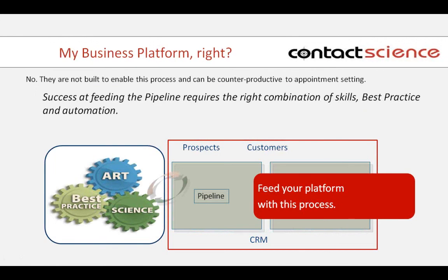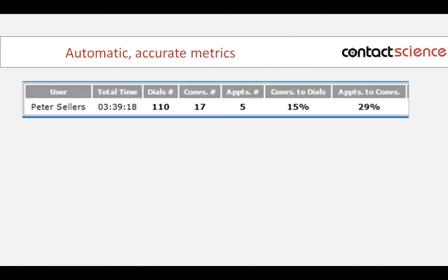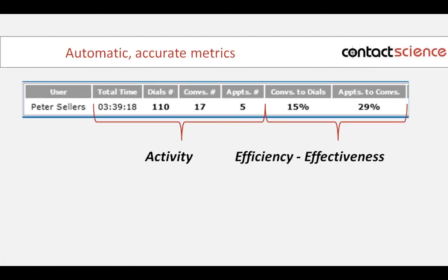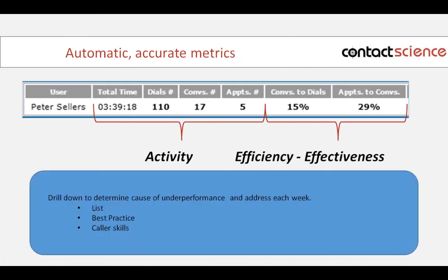What we would recommend is to at least take a look at putting a process engine in front of your CRM to feed that CRM pipeline — the most efficient telephone prospecting business process you can do to fill that CRM pipeline. That's how we interact with CRMs to improve your CRM investment. From this report now, you can judge the effectiveness and productivity of your process, the list, the best practice, and your caller skills.